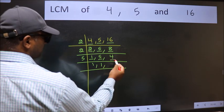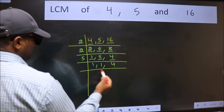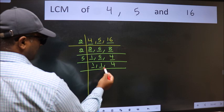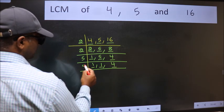The other number 4 is not divisible by 5 so we write it down as it is. Now we got 1 here and here so focus on the next number 4. 4 is 2 times 2.